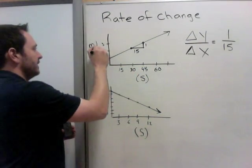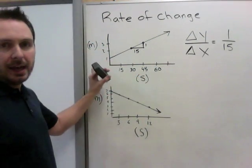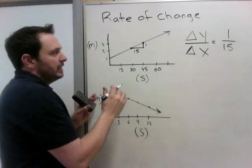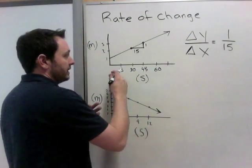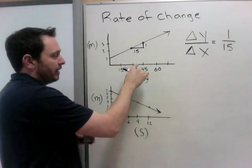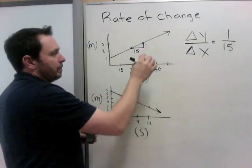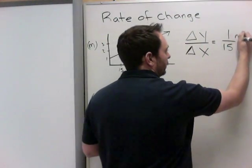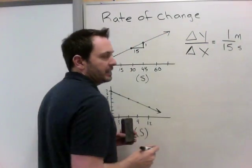So my change in y divided by my change in x is 1 over 15. And I've given you some units here. I gave seconds and meters. So maybe something's going up, as it may let a balloon off, and it's rising through the air. So every certain amount of 15 seconds, it's going up 1 meter. So it's 1 meter per 15 seconds.